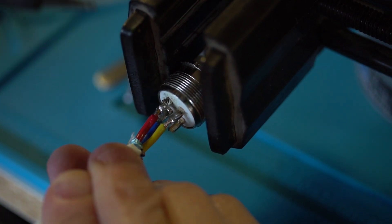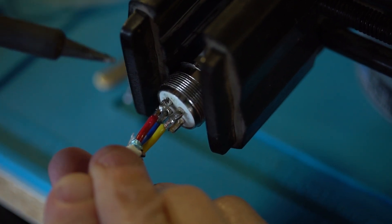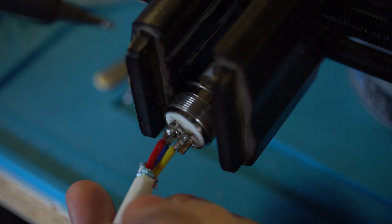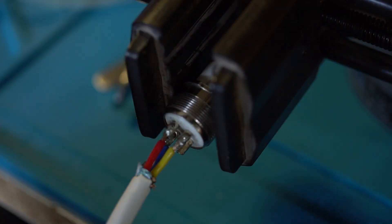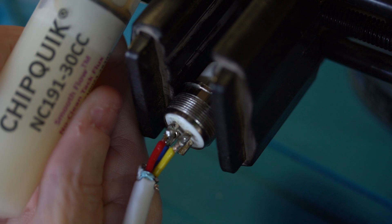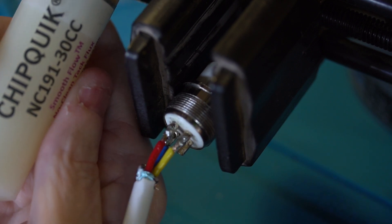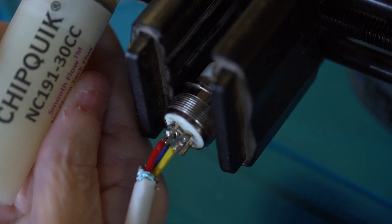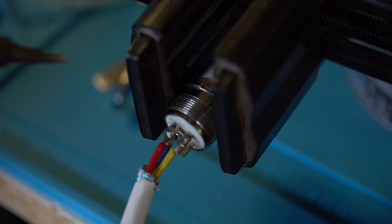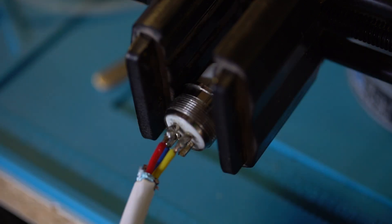And a larger tip would probably be better as well. Once you've gotten them all seated in, you can make some adjustments. And you can also add more flux if you need to. This is the flux that I use here. Let's see if I can get it in frame. It's the ChipQuick NC191.